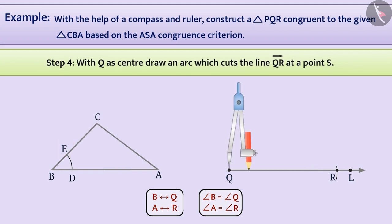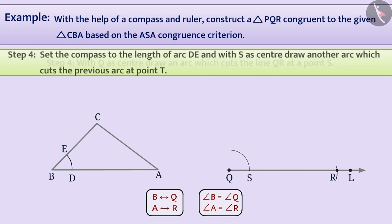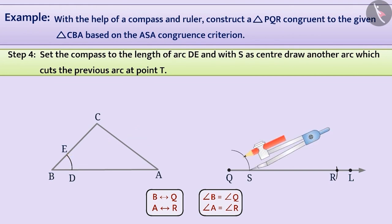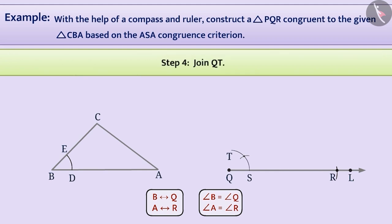Without changing the compass setting, with Q as centre, draw an arc which cuts the line QR at a point S. Set the compass to the length of arc DE. Using the same radius and with S as centre, draw another arc which cuts the previous arc at point T. Next, we join Q and T to form ray QT.